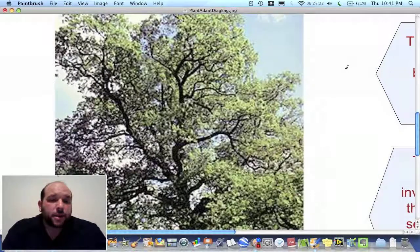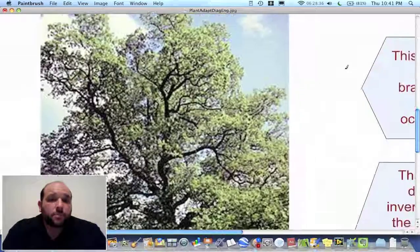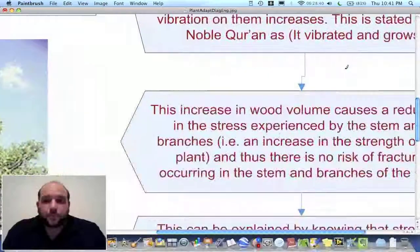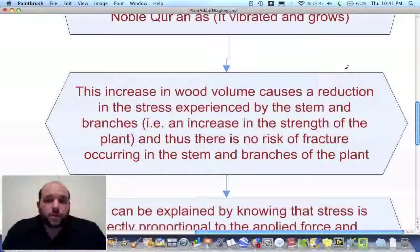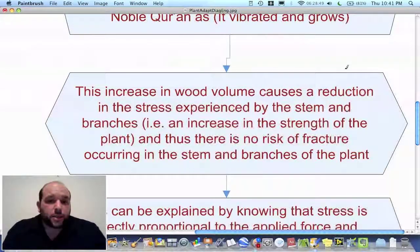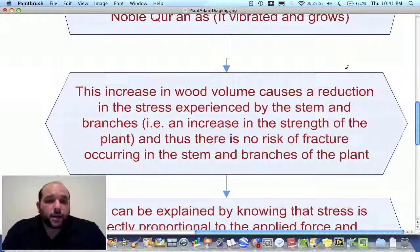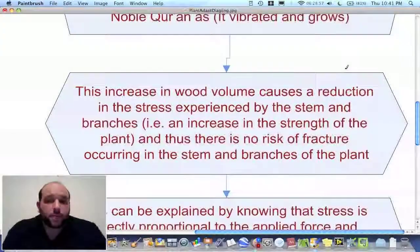And the increased thickness in the branch gives more strength and thus protects it from fracturing. I summarize this here, saying that this increase in wood volume causes a reduction in the stress experienced by the stem and branches, i.e. an increase in the strength of the plant. And thus, there is no risk of fracture occurring in the stem and branches of the plant.